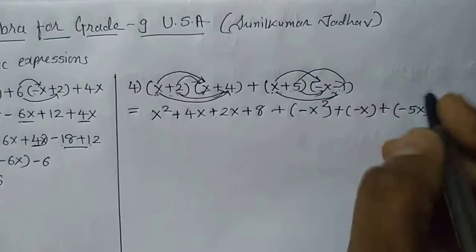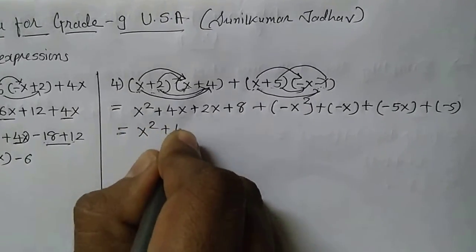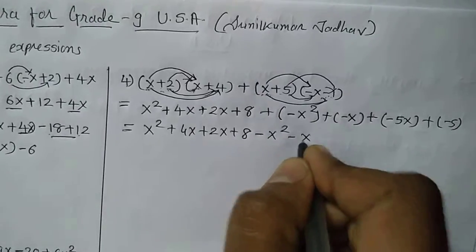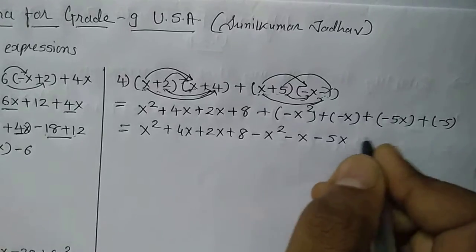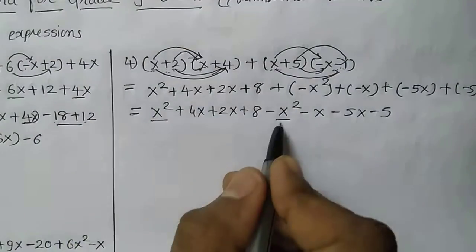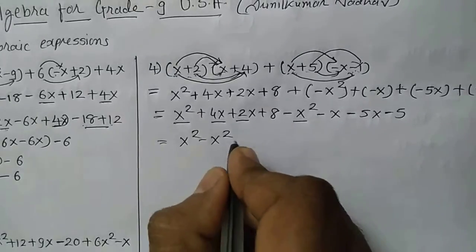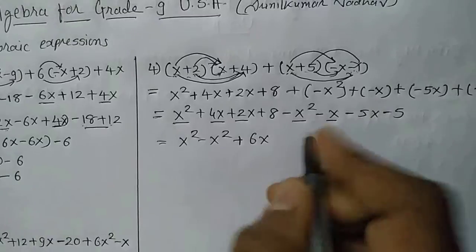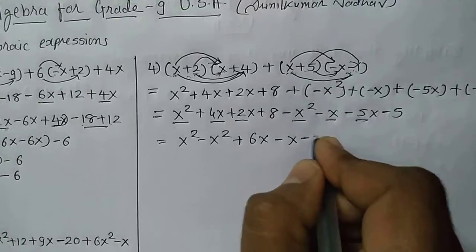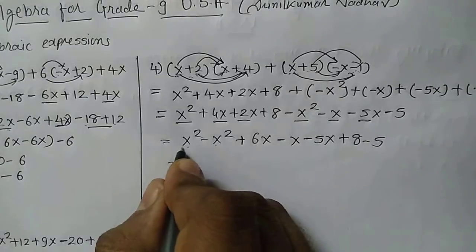Then 5 times minus x gives minus 5x, and plus into minus gives minus 5. Now we gather the like terms. Writing it out: x squared plus 4x plus 2x plus 8, minus x squared, minus x, minus 5x, minus 5. Gathering: x squared minus x squared equals 0. For the x terms: 4x plus 2x is 6x, minus x minus 5x is minus 6x, so 6x minus 6x equals 0.